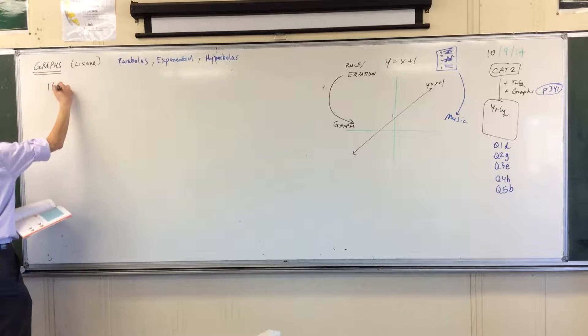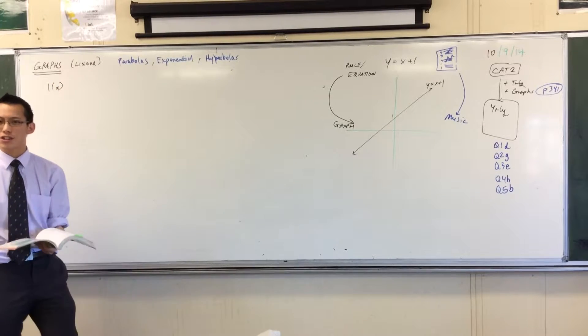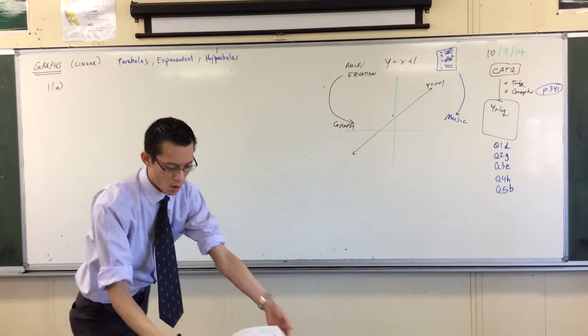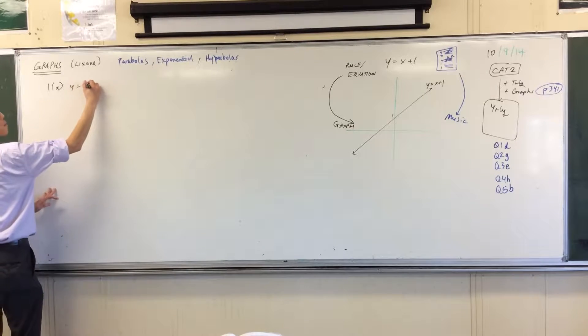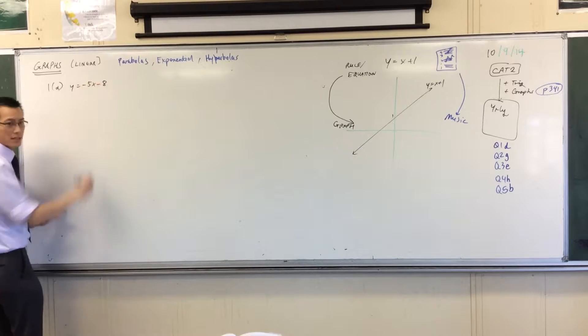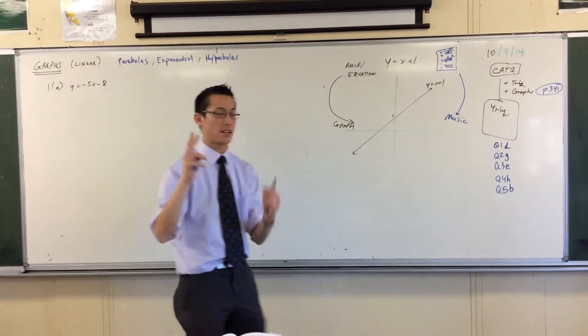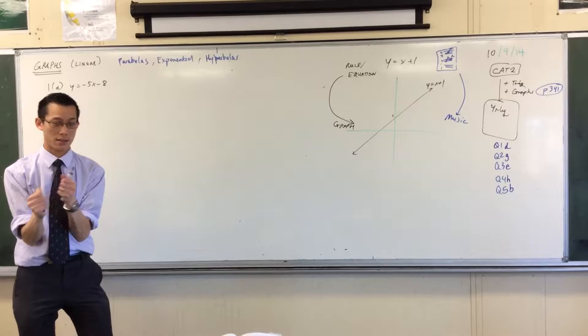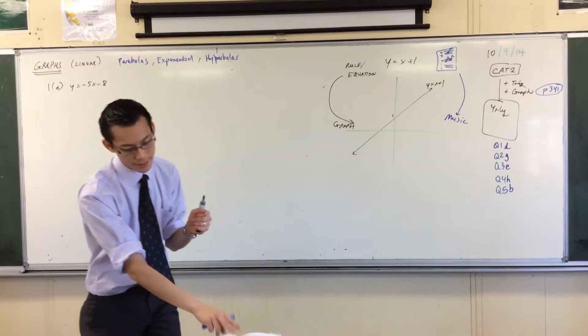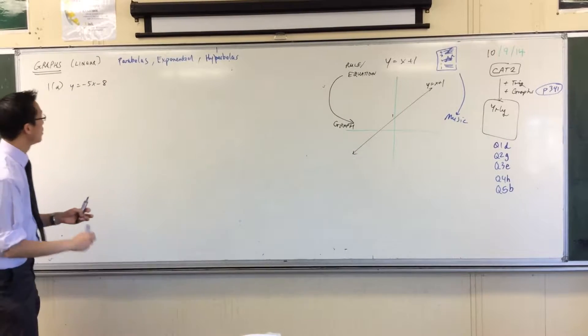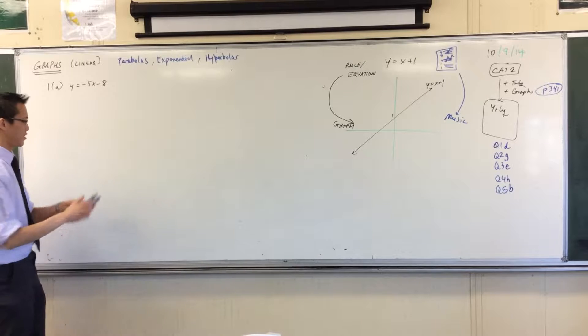So we're doing this question, and the equation or the rule they give us is y equals minus 5x minus 8. Now we're being asked to find two things, and then using those two things we can draw this. We're looking for gradient and y-intercept. Now the gradient and the y-intercept, let's just remember what they are.